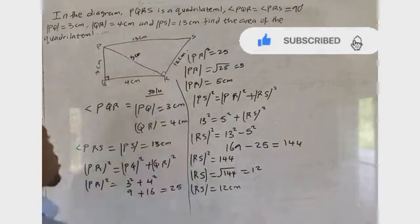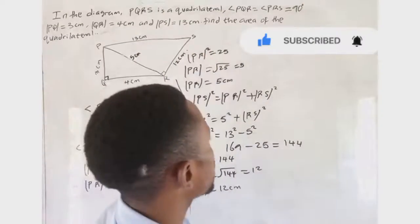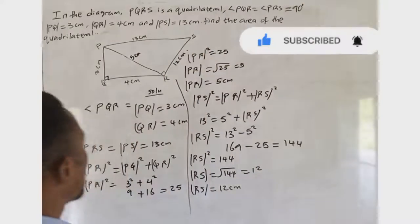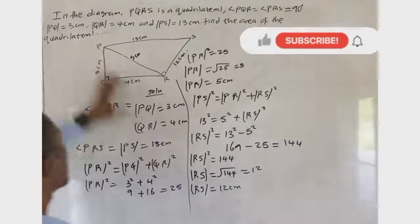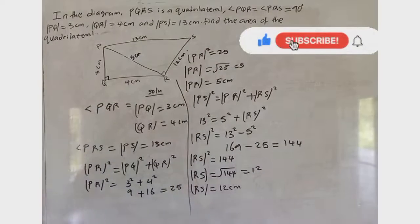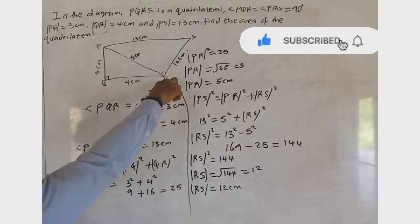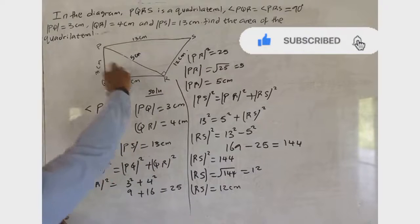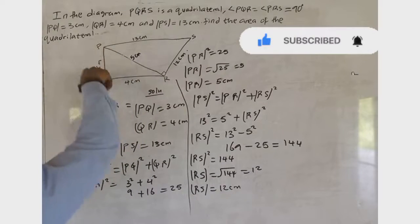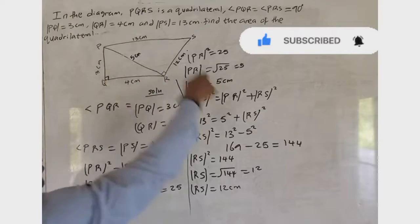Therefore RS = √144 = 12 centimeters. So our side RS is 12 cm. Both triangles are now complete and we are ready to find the area of the quadrilateral.